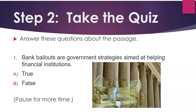Number 1: Bank bailouts are government strategies aimed at helping financial institutions. A. True. B. False. You can pause the video if you'd like more time.